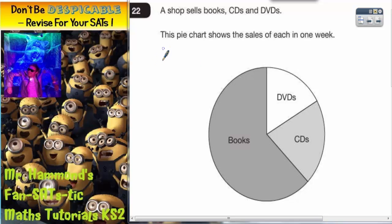Question 22. Looks like some sort of pie chart. It says a shop sells books, CDs and DVDs. This pie chart shows the sales of each in one week.